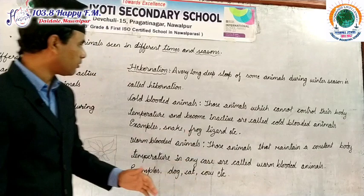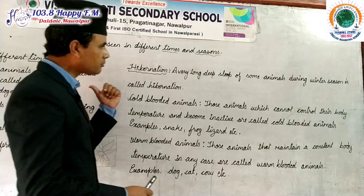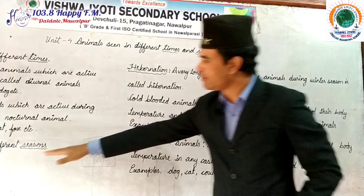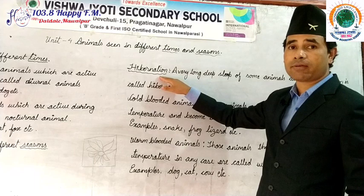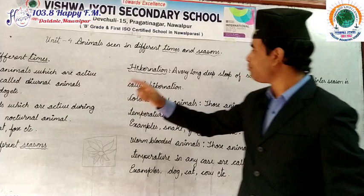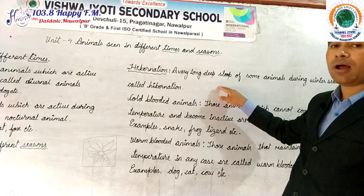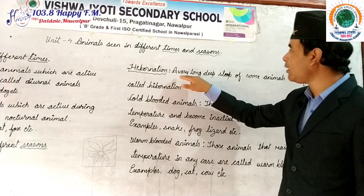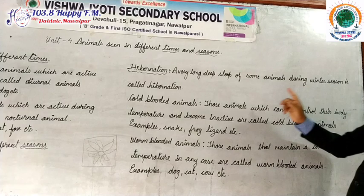Animals which are active during the summer season become passive during the winter season — they go for a long winter sleep. That is hibernation. Definition: A very long deep sleep of some animals during winter season is called hibernation.